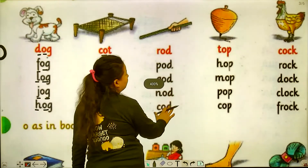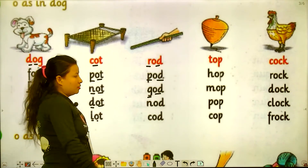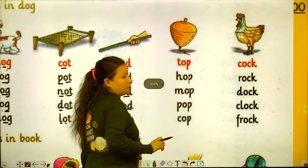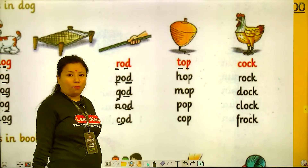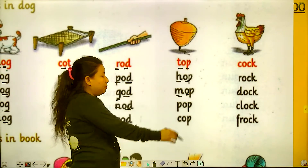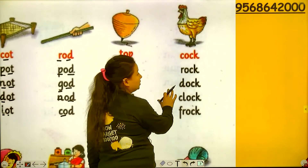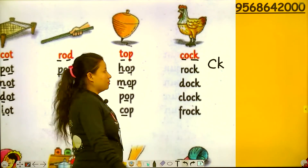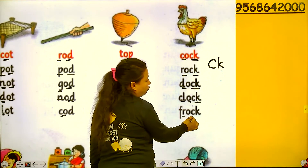Now next is rod, pod, god, nod, and cot. Then: top, hop, mop, pop, and cock. Now next is cock — C and K sounds like S. Rock, dog, clock, and frog.